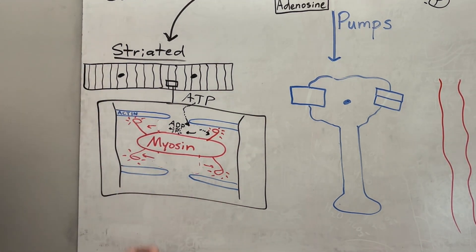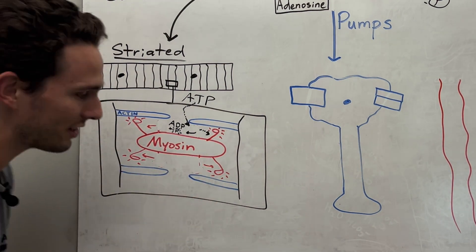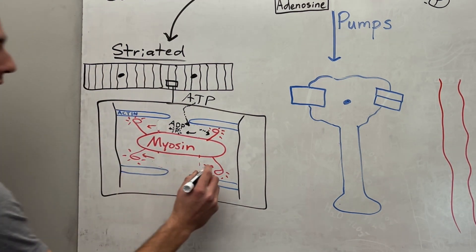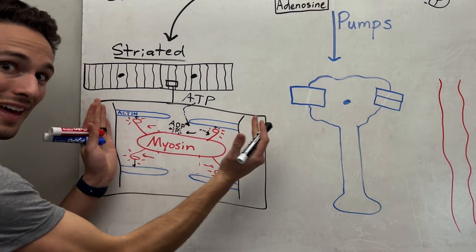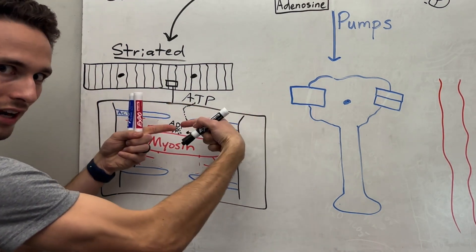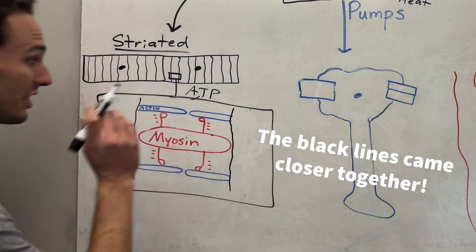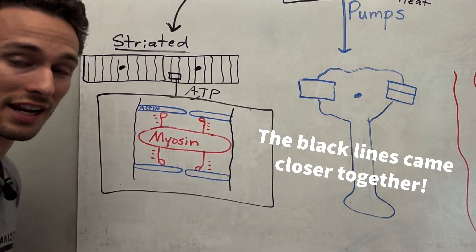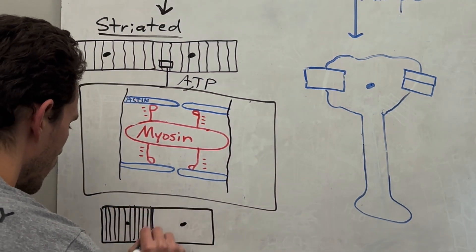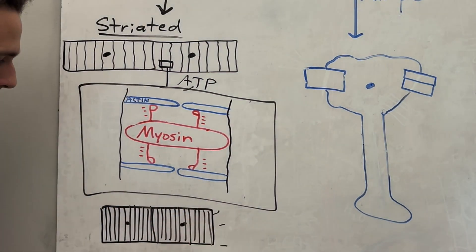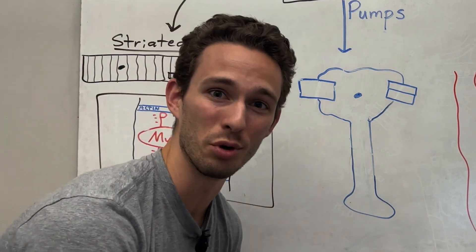By doing so, we're preparing catapults of all these myosin heads so that when they interact with actin, they can pull the actin in that direction. When this happens to literally every single striation, all the lines come together and the muscle shortens, contracts, and you begin moving.